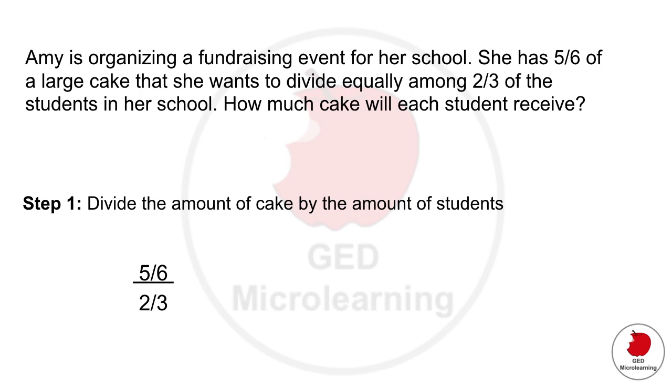So the first thing is that we're going to have to divide that amount of cake by the number of students, right? So we would divide 5 sixths by 2 thirds.